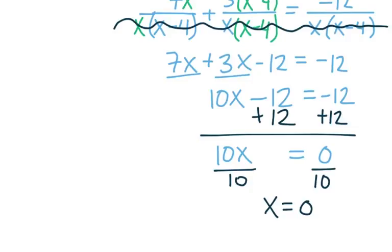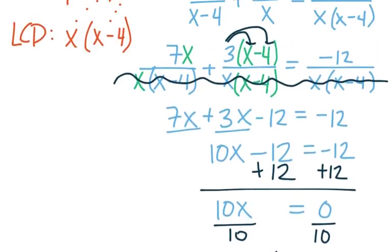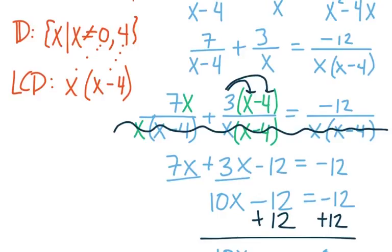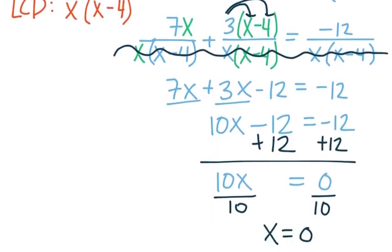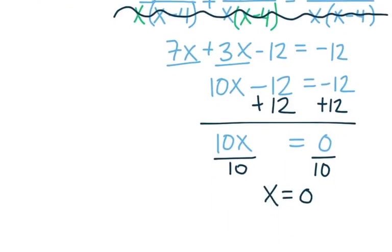So our apparent solution to the equation is 0. But remember, anytime you're solving a rational equation, we must consider how the domain feels about the solution we just got. So if I run back up to where we had our domain, our domain said all x are good except for x equaling 0 or 4, and then we come down to where we solved, and we just found x is 0.